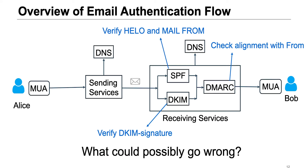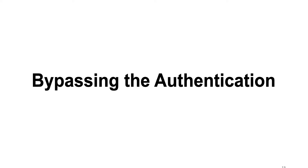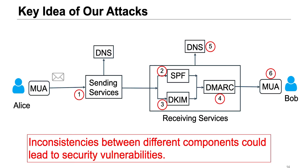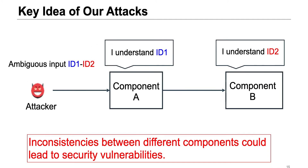So the flow sounds good — what could possibly go wrong? We found 18 attacks to bypass the authentication. The key idea exploits inconsistencies between different components. An email sent by Alice needs to be processed by at least six different components before reaching Bob. Those components are often built by different developers or even different companies and have a wide range of inconsistencies that can be exploited by attackers. An attacker can craft ambiguous messages with multiple identifiers — component A may interpret one identifier, but component B may interpret another — causing exploitable semantic ambiguity and leading to authentication bypass.